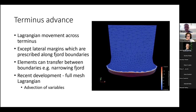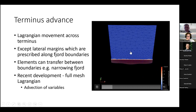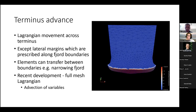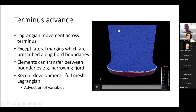The model also has the capability to transfer elements between boundaries. If you've got a narrowing fjord, the front is going to hit that boundary before the lateral margin makes it around, so you need to be able to transfer elements between boundaries. The nodes are moving downwards, and I've recently looked at making the full mesh Lagrangian apart from the lateral and upflow boundaries, which would potentially allow you to advect variables.